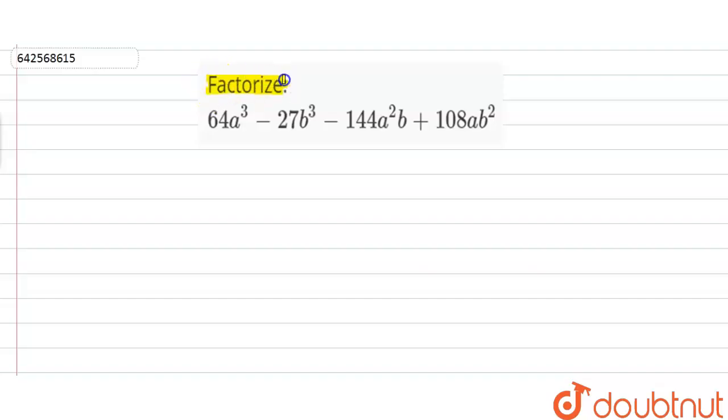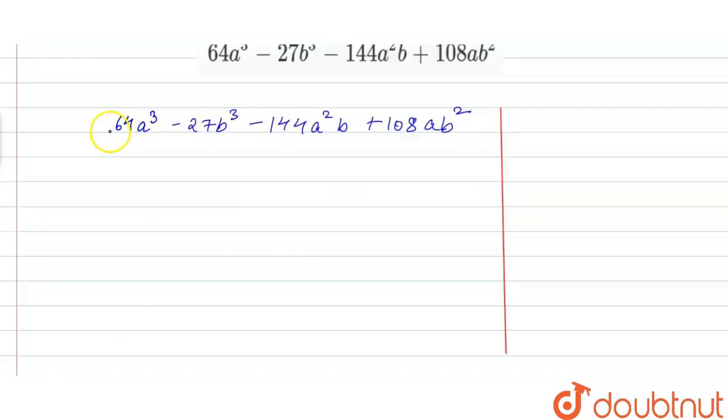The expression given to us is 64a³ - 27b³ - 144a²b + 108ab². This 64a³ can be written as 64a³, where 64 is nothing but 4³ times a³.